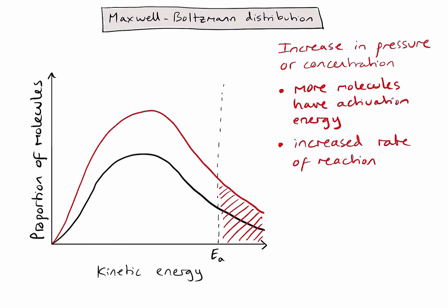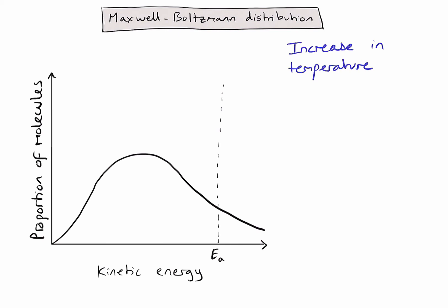Let's go back to the original curve and consider how an increase in temperature would affect rate of reaction. If I increase the temperature of my molecules, what we're actually doing is increasing the average kinetic energy of those molecules. So I'd expect to see my graph shift to the right. Because that curve is being shifted to the right, it's going to be squashed down a bit, but if I now look at the area to the right of the dotted line, I can see again that the number of molecules with the activation energy has increased.